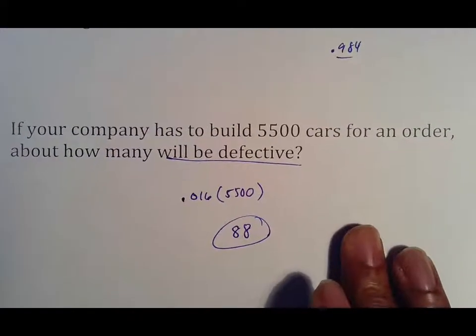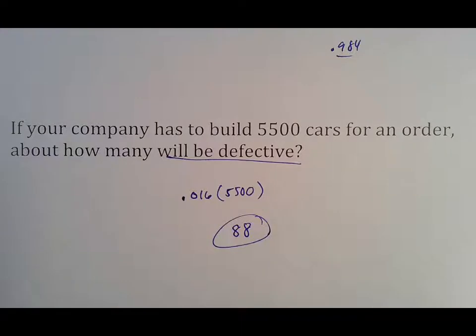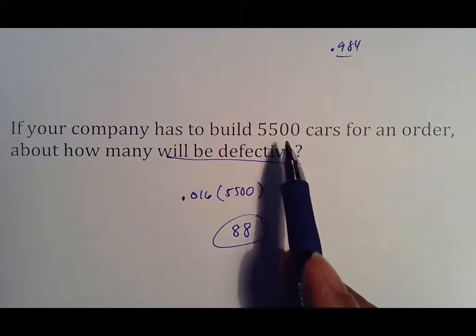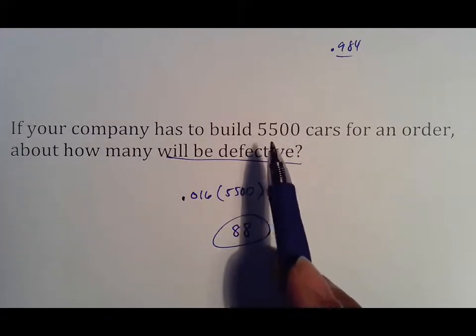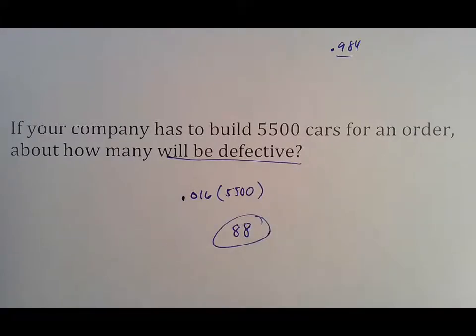So in this case, if I know I have to give out 5500 cars for an order, as a business owner, this is where statistics comes in. As a business owner, I'm not going to run 5500 cars because I know 88 of them are more likely going to be defective. So I, on the other hand, might say, let's do 5600, because out of 5600, if 88 are defective, I still have 5500 to give to my customer because you do not want to give your customer faulty things.